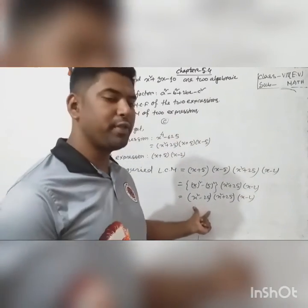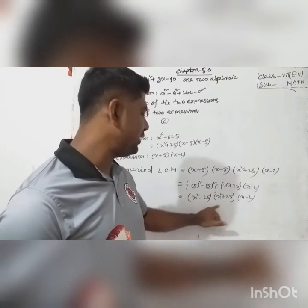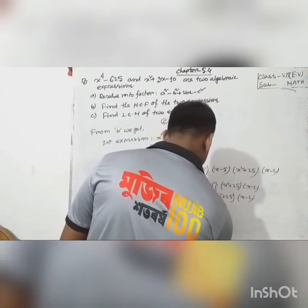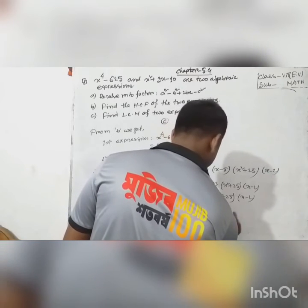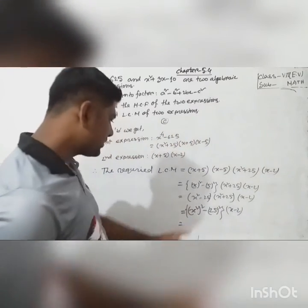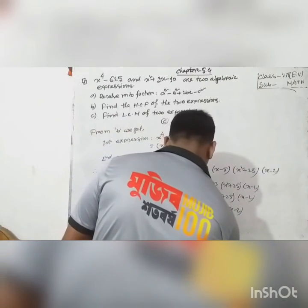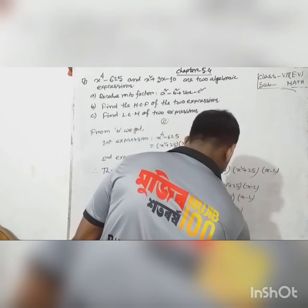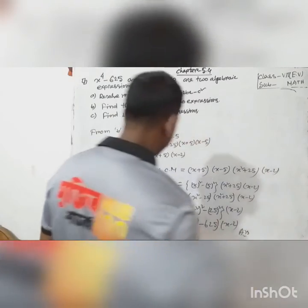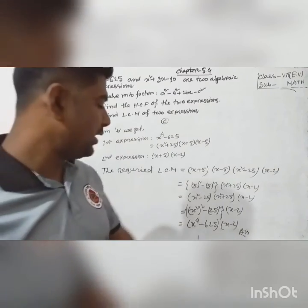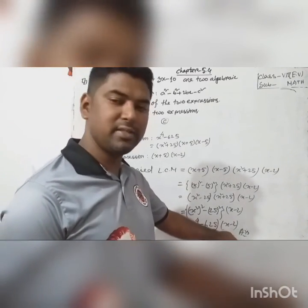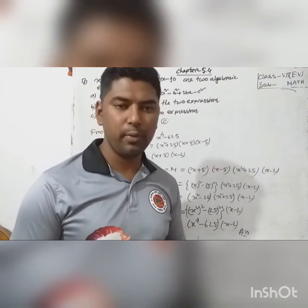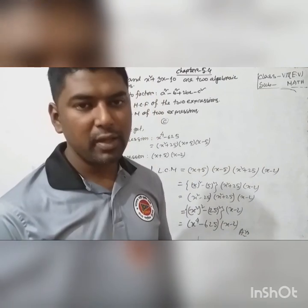So the required LCM equals (x⁴ minus 625)(x minus 2). I hope everybody understands these questions and enjoyed the class. Dear students, if you have any problem, please inform me. I will try to solve your problem. Thank you everybody.